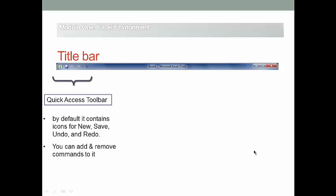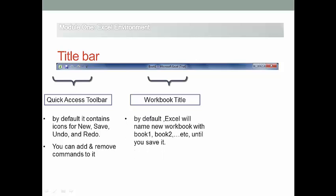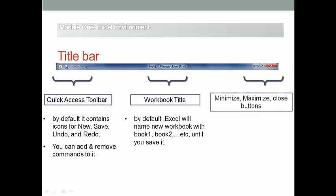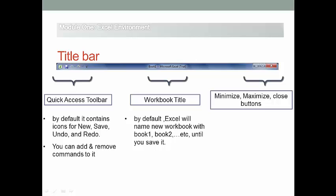Part 2 of the title bar is the location where the name of the workbook is written. By default, Excel will name new workbooks Book 1, Book 2, and so on, until you save them. Part 3 contains the buttons for Minimize, Maximize, and Close.